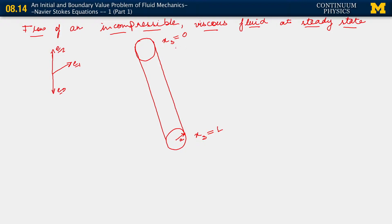Let's suppose that at this end, x3 equals 0, represents one subset of our pressure boundary — we call this partial omega t p1 — and this is partial omega t p2. At this end we have p equals p0, and at the other end we have p equals p sub L. Just different pressures at the two ends of the pipe.